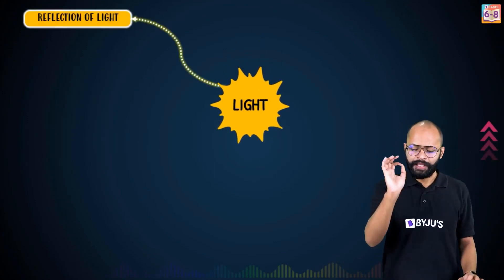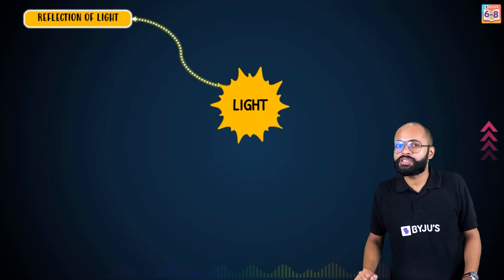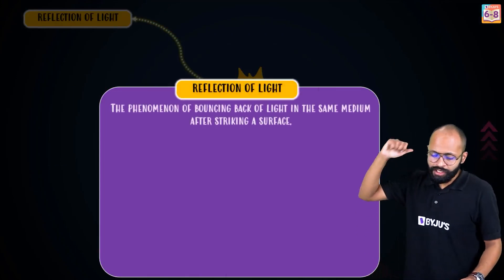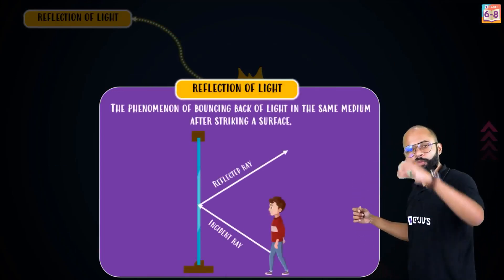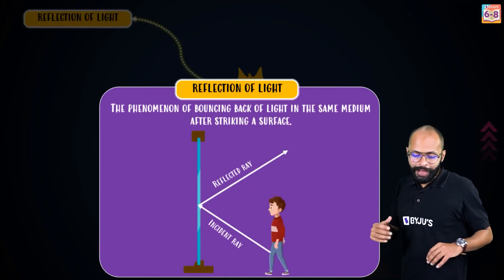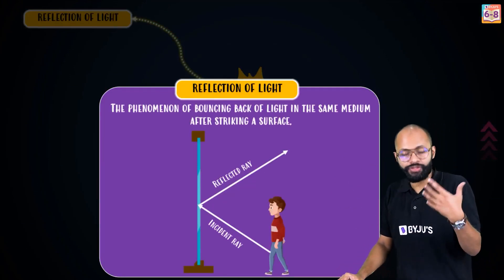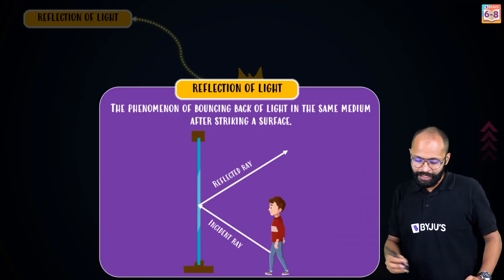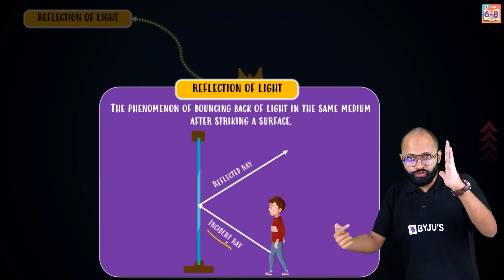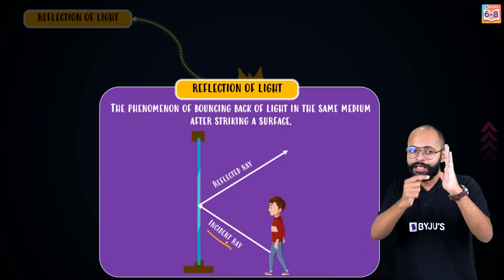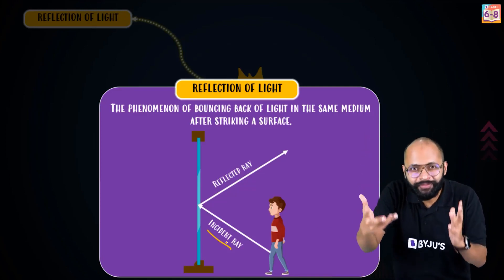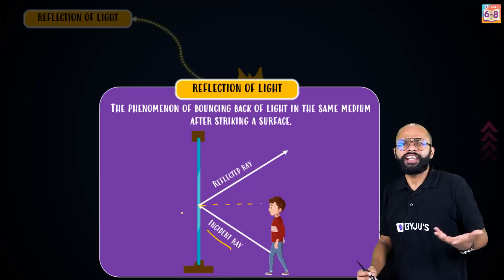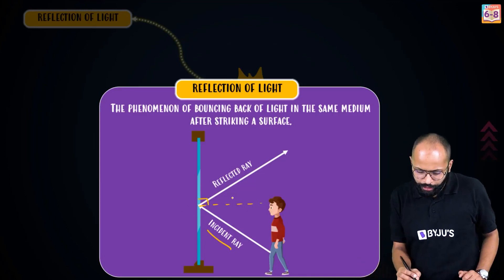Next important topic in your syllabus is the reflection of light. The word itself gives you a hint — reflection means bouncing back. The phenomenon of bouncing back of light in the same medium after striking a surface is called reflection. Now the terminology: the light which is falling on the surface is called the incident ray, the light which is reflecting is called the reflected ray, and the imaginary line at 90 degrees to the surface is called the normal.